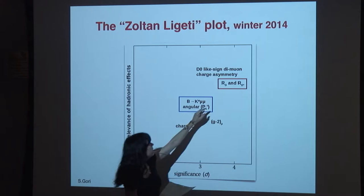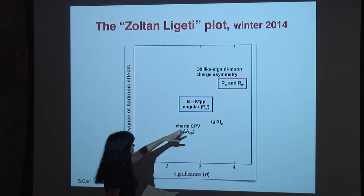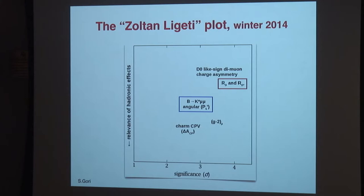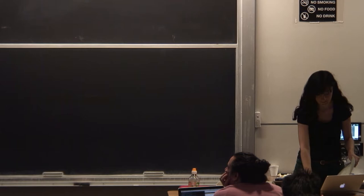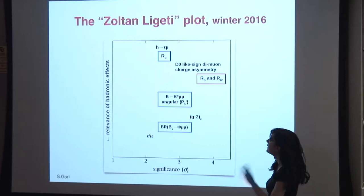Here you see the situation of anomalies — flavor or CP anomalies — in the winter of 2014. We have the well-known G-2, and these two that we'll discuss today. Additionally, some anomaly in charm and some anomaly measured by D0. If you look at this plot over time, you see that something goes away. The CP violation in charm goes away. We have some anomaly in Higgs to tau mu — a flavor-violating Higgs decay. This was the status in 2016. RK appeared for the first time in 2016.